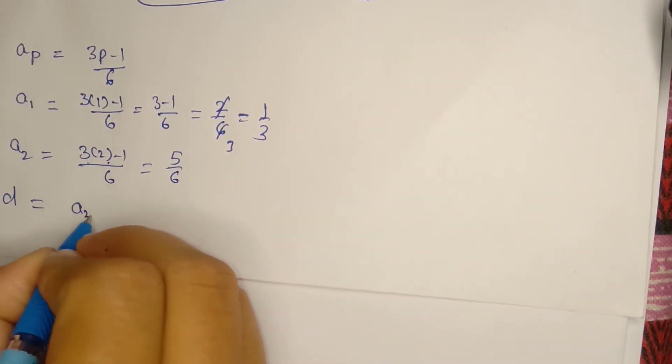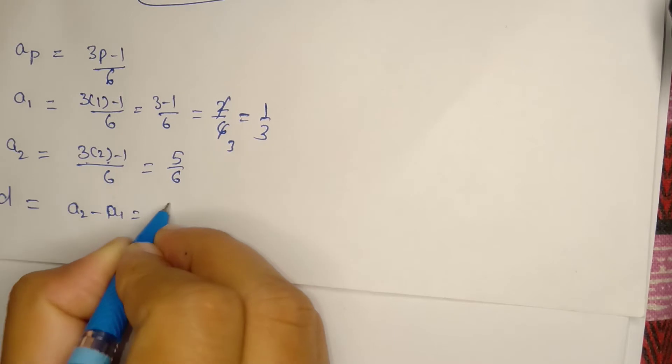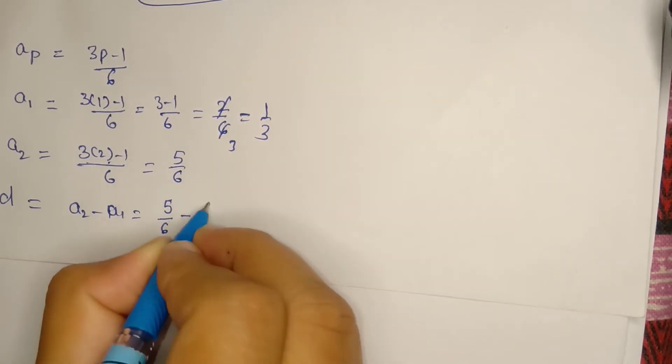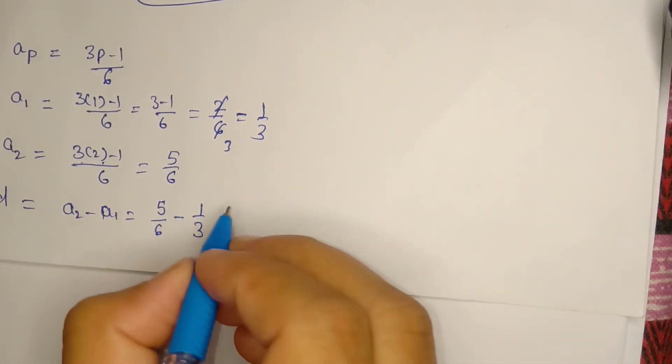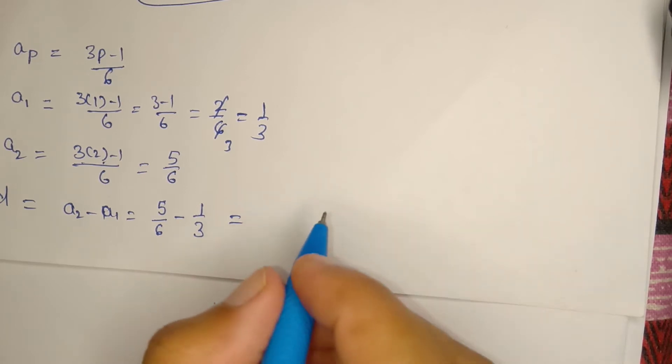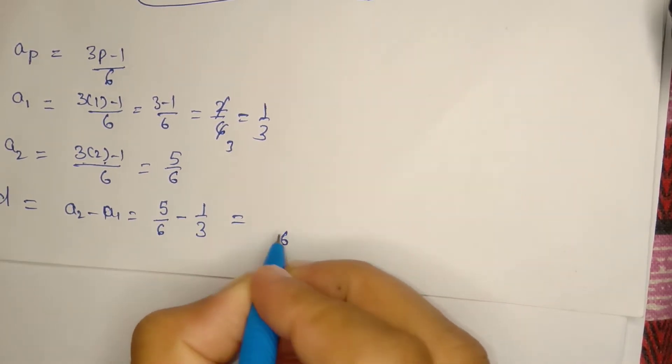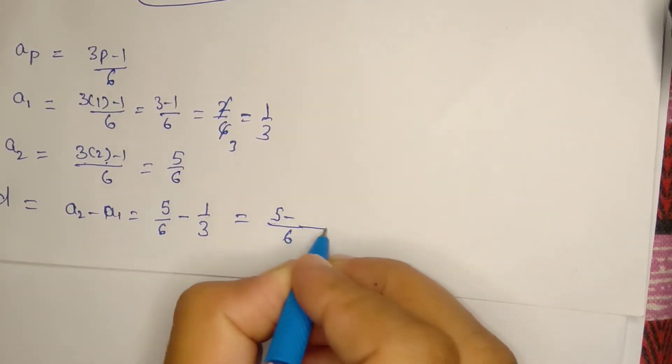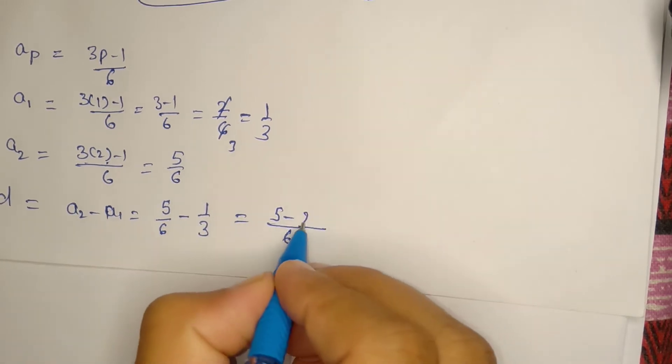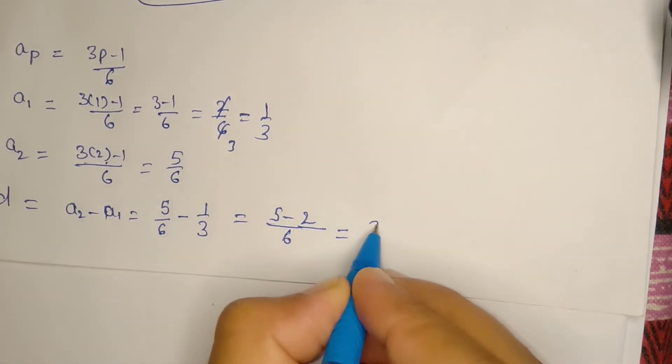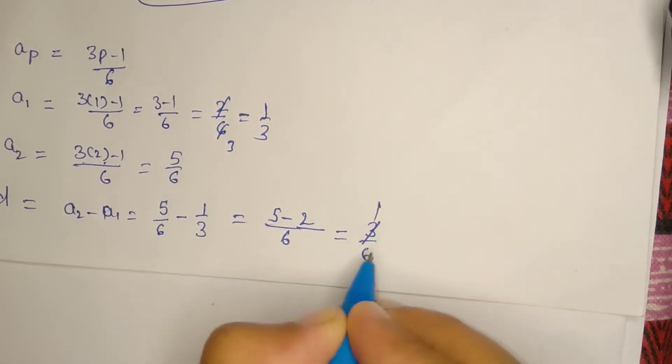What will be the value of d? a2 minus a1, that is 5/6 minus 1/3. Taking LCM 6, we get 5 minus 2, that is 3 over 6. Canceling, we get 1/2.